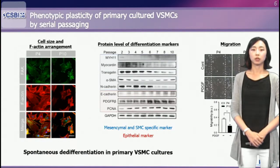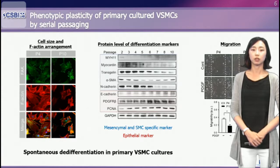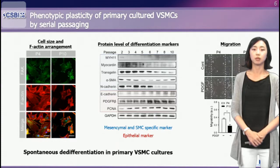First, we observed the spontaneous de-differentiation in primary VSMC cultures in the conventional culture system. VSMCs at later passages lost parallel organization of actin filament bundles to become less elongated with a randomized actin filament distribution. The size of cells dramatically decreased during sequential culture passages although the shape of cells was similar. We also observed that expression of smooth muscle-specific proteins such as myosin heavy chain, myocardin, transgelin, alpha smooth muscle actin, and N-cadherin in primary cultured VSMCs declined in a passage-dependent manner.